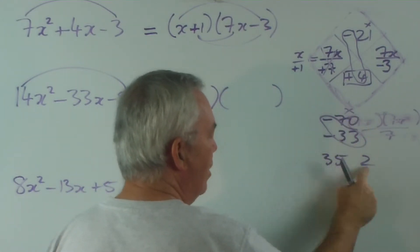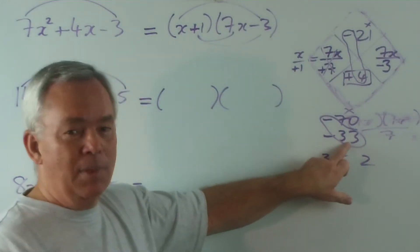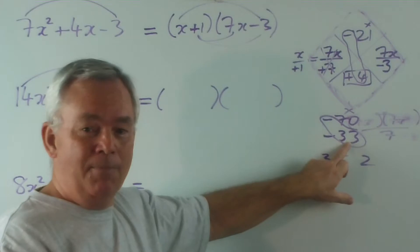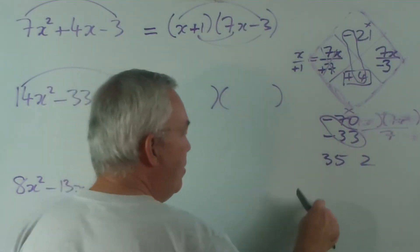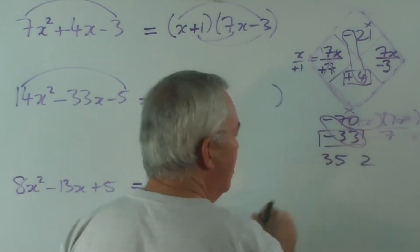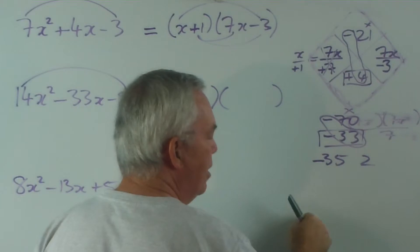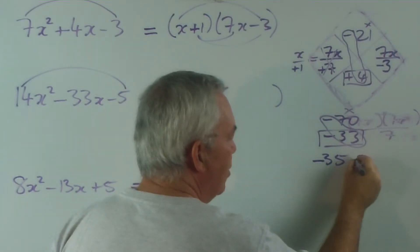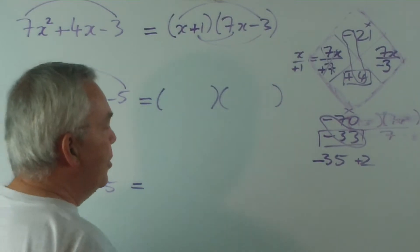35 is half of 70. So 35 times 2 makes 70, and they are in fact 33 apart. So the fact that this was such a huge number turned out to be a benefit rather than a liability. How do we get -33 with these two numbers? Well, the big one has to have the same sign, and from -35 we have to come up 2.